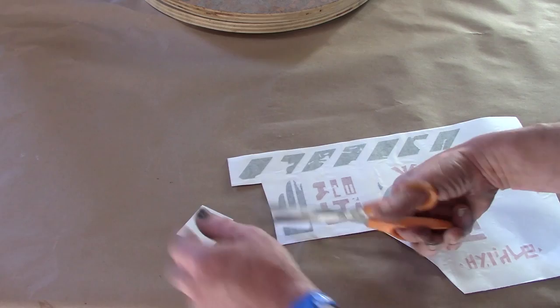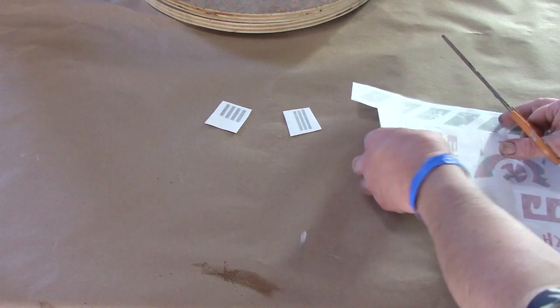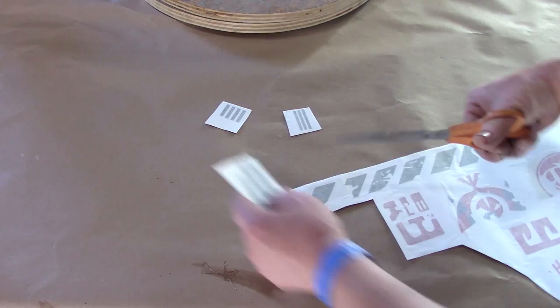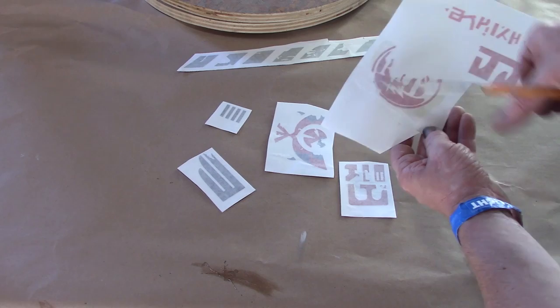We're going to start by separating everything. You don't have to cut close to the edges because all of these are pre-weeded. They're already ready to apply. But we do need to separate these from the sheet. Make sure when cutting this guy out that you keep this little tan. There's a very light tan colored area.